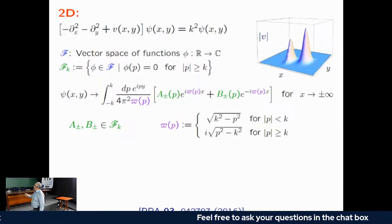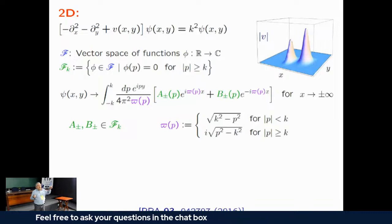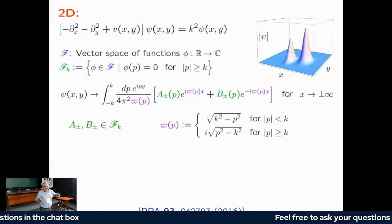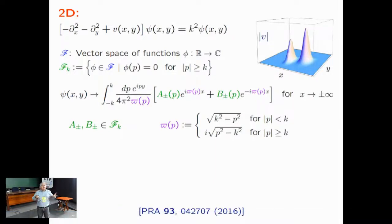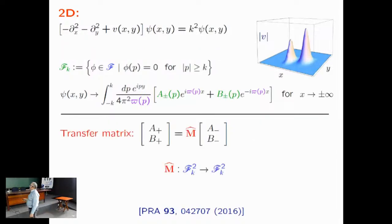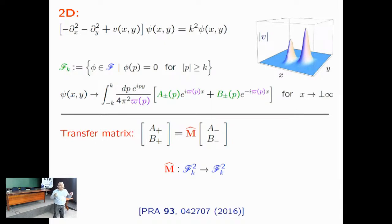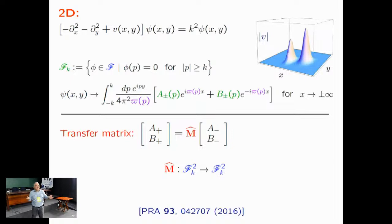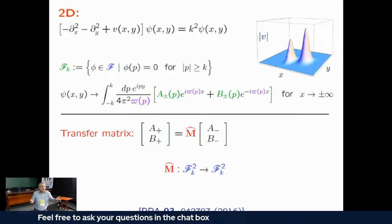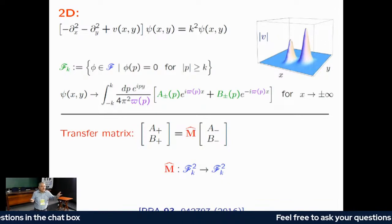The Fourier mode coefficients — analogous to A's and B's in one dimension — are now functions rather than numbers. Extended to vanish outside the interval [-k, k], they define a transfer matrix M̂ exactly as in one dimension, but now its entries are linear integral operators acting on function spaces. The key question is whether this generalized transfer matrix retains the useful properties of its one-dimensional counterpart — can it solve the scattering problem, and does it satisfy an analog of the composition property?